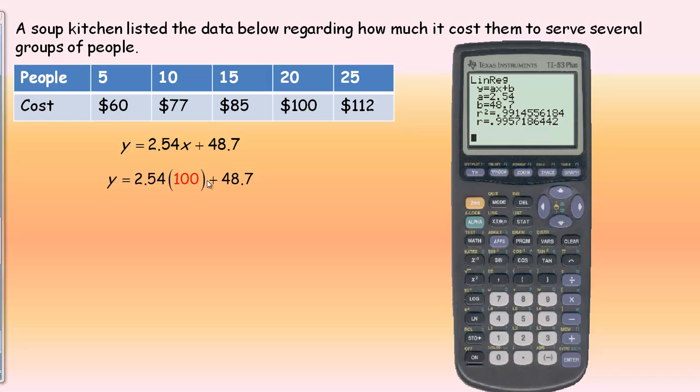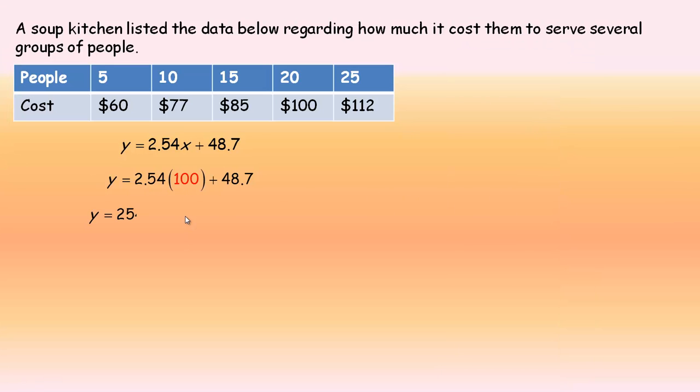Let me just put up my equation. There's my equation with the rate and the vertical intercept plugged in. What I'm doing now is saying, well, let's say we had a lot more people—a hundred people. This equation could be used to find out what the cost would be approximately. We plug 100 in place of X, which is the number of people, and evaluate this. 100 times 2.54 is 254, and we're adding the 48.7.